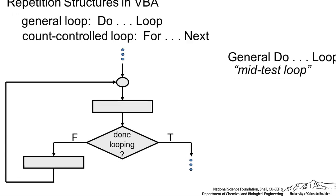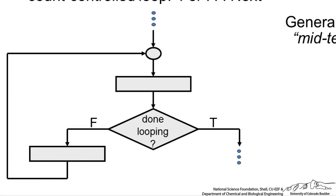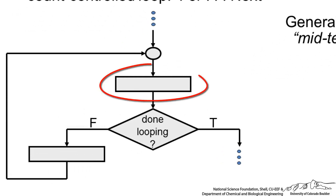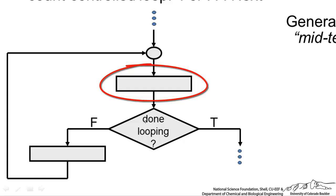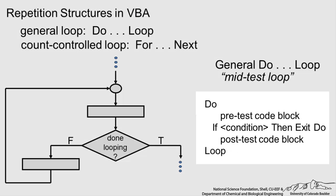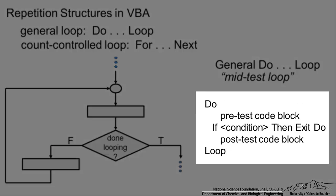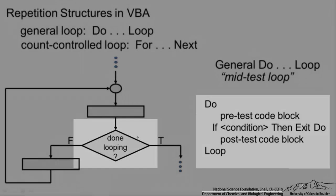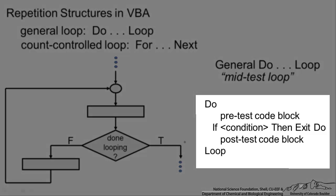So the general do loop flow diagram is shown here. We come into this, we have some code here before you make a decision and then we have a block of code after. The general structure of this in VBA looks like do and then you have pretest code blocks so you could do something here. You might get user input or do some calculations and then we have an if condition and that is this diamond in the middle. If that condition is true, then we exit. If it is false, then we loop back to the beginning.